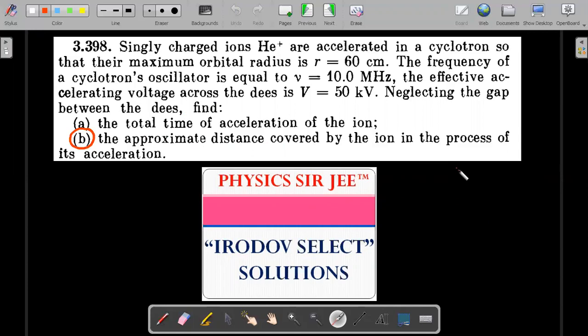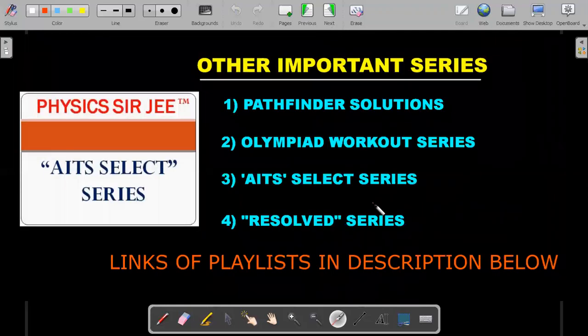So the second question that he asks is the approximate distance covered. And this is even not straightforward and it requires some nice approximation. That's why Irodov clearly states the approximate distance. So I'll come up with a solution for this and a proper explanation in the next upcoming videos. And in case you have liked this, I'll be coming up with more AITS select series. I'll be selecting good questions which will boost up your confidence for the JE advanced examinations.